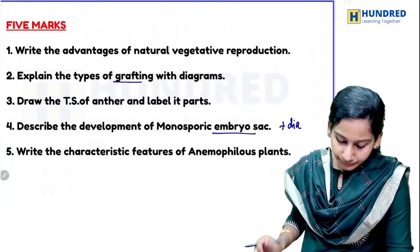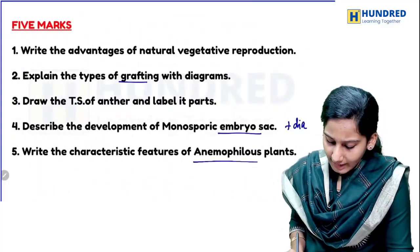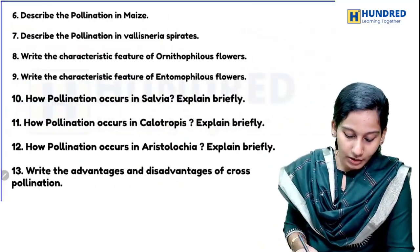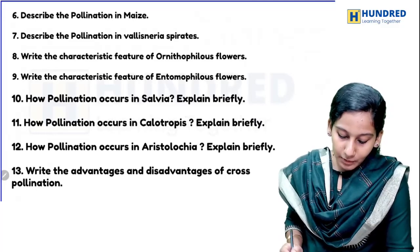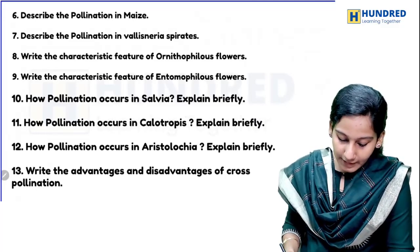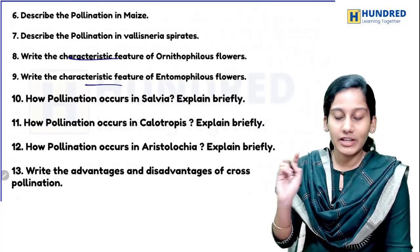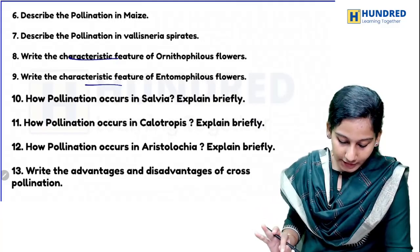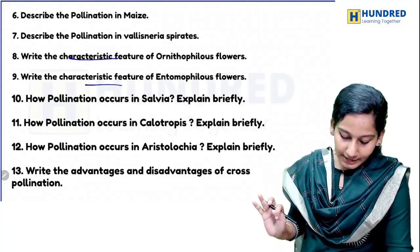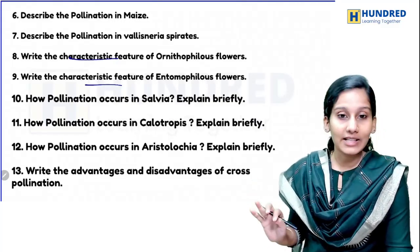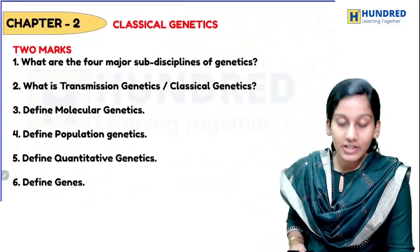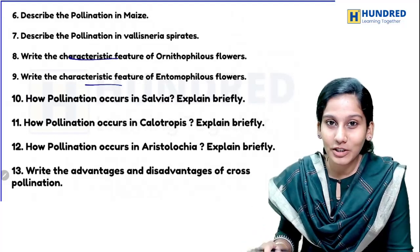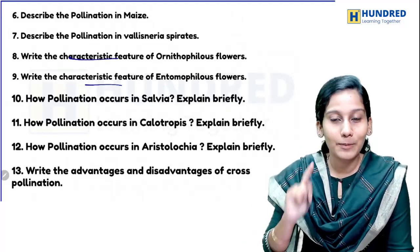There are characteristics of anemophilous plants, ornithophilous plants, and entomophilous plants — characteristics of each one are very, very important. Topics include pollination in Salvia, Calotropis, and Aristolochia, as well as their advantages and disadvantages. These are the important questions from chapter one.